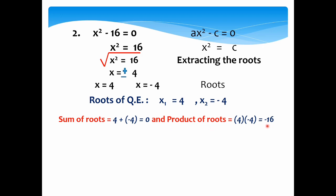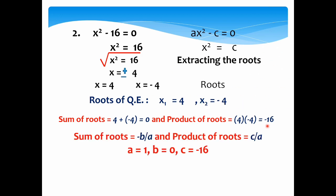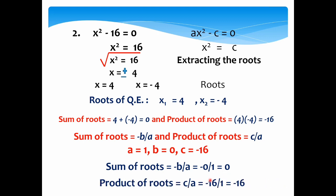If we are directly asked for the sum and product of roots, we use negative b over a and c over a. Here a equals 1, b equals 0, and c equals negative 16. The sum of roots equals negative 0 over 1. Note that 0 is neither positive nor negative, so even negative 0 divided by 1 is still 0. The product of roots equals negative 16 over 1, which is negative 16.